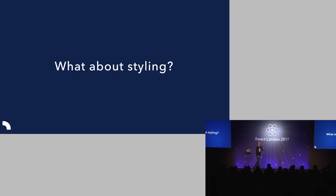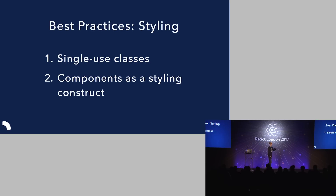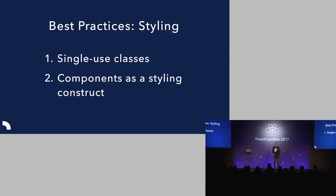In component-based systems we've discovered some best practices. The first is that we have single-use classes. If you have a button component that's encapsulated, it might have a 'button' class name — but you wouldn't reuse that class name anywhere else. Because if another developer comes in and wants to change the styling of the button, they go looking for the button class. If you use that anywhere else, it breaks unrelated parts of your application. With components, we can just use every class name once and then reuse that component throughout our application.